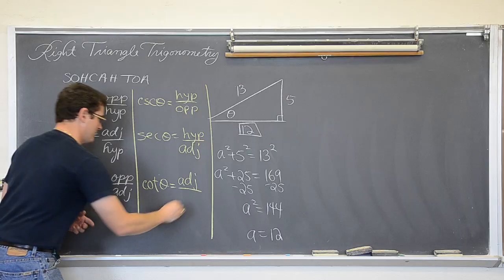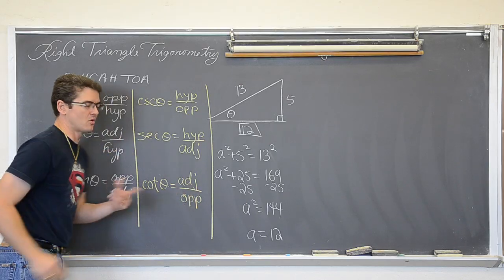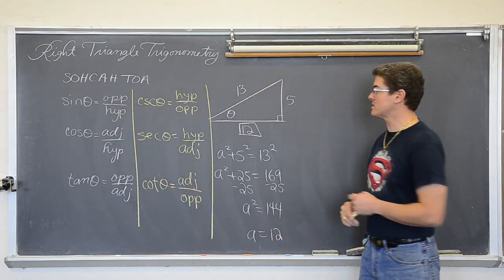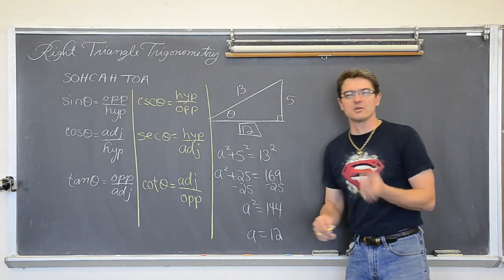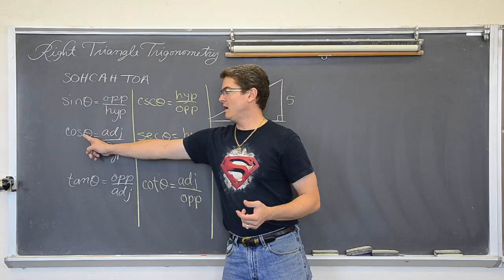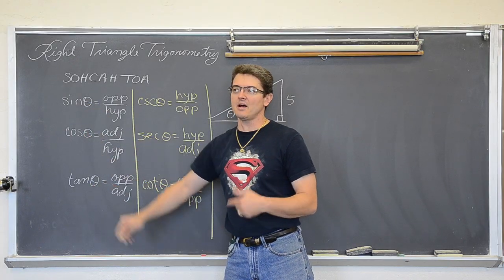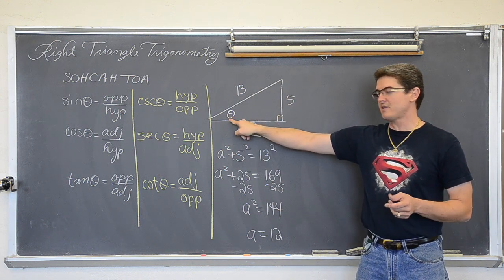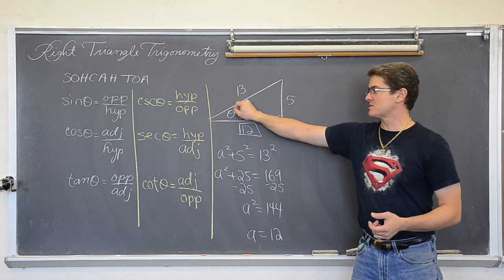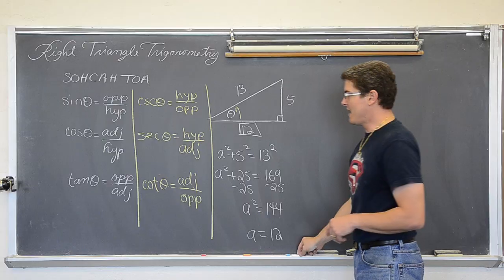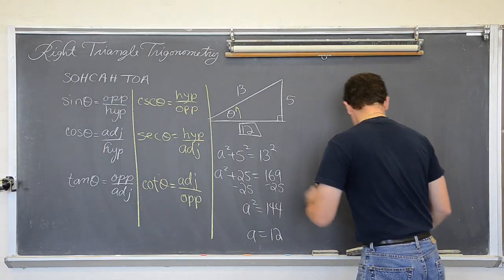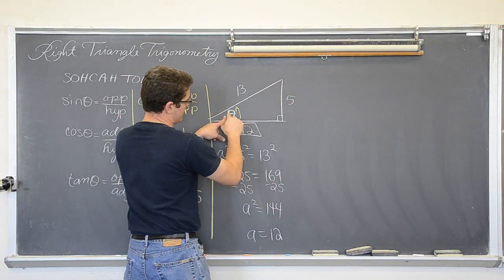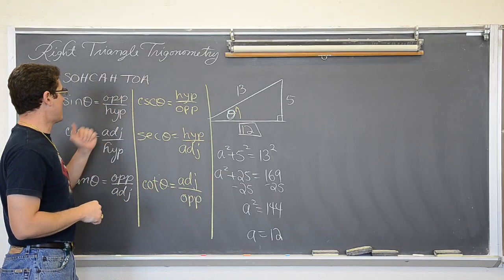Now if you happen to have found this video but you are only in geometry or algebra 2, just studying the basic three trig functions, your textbooks may not be using these Greek letters. You will be using the capital letters that are on the corners of the vertices of your triangle. So you might see the sine of A, the cosine of A, or the tangent of A, and I will be using those labels as well in a couple of my examples. But I just have a generic triangle with the sides given, and theta as the number of degrees or radians in the angle.